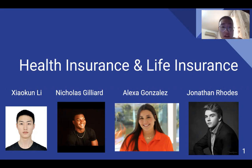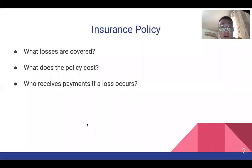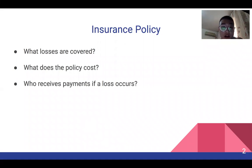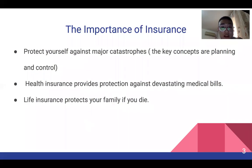An insurance policy is a contract with an insurance company. It spells out three parts: what losses are covered, what does the policy cost, and who receives the payments if a loss occurs. The need for both life and health insurance arises from Principle Seven.